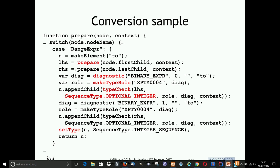What we do is make an element for the to expression, recursively process the left-hand and right-hand sides, form up some diagnostic information, then add a child which is the result of the type check — because the left-hand side is required to have a type of optional integer. We do the same for the right-hand side. Then we've finished and we've got a set type, because we know the type of this node is actually an integer sequence, and that goes back up into the recursive space.